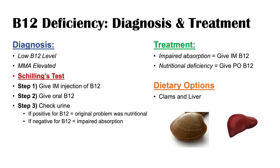It makes sense that liver is high in B12 — it's the place where vitamin B12 is stored within our body, so it naturally has high levels. Other animal products also contain vitamin B12 as well.